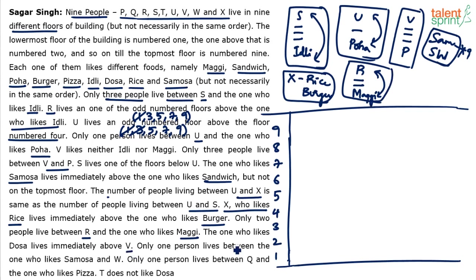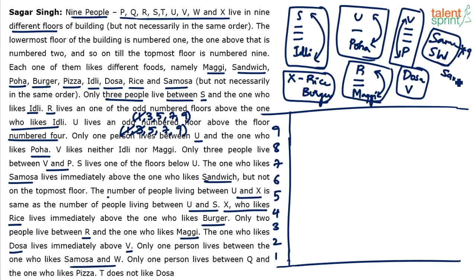The one who likes dosa lives immediately above V. Only one person lives between the one who likes samosa and W, so samosa — W with one person between them and their positions can interchange.